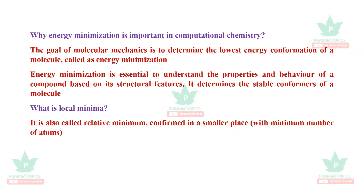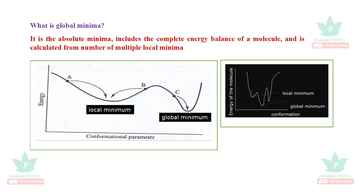Energy minimization in computational chemistry finds the lowest energy conformation of a molecule. It is essential to understand the properties and behavior of a compound based on its structural features. There is a local minima, a relative minimum, and a global minima — also called the absolute minimum.